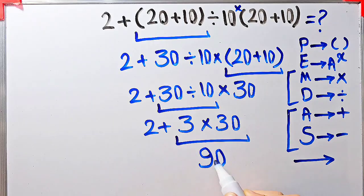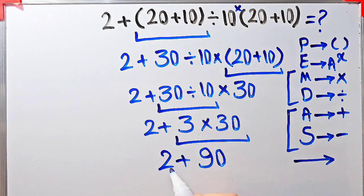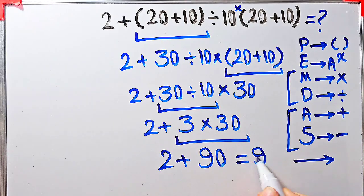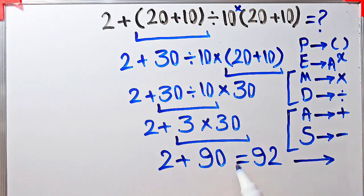Now the question is 2 plus 90. 2 plus 90 equals 92. The final answer of this question equals 92.